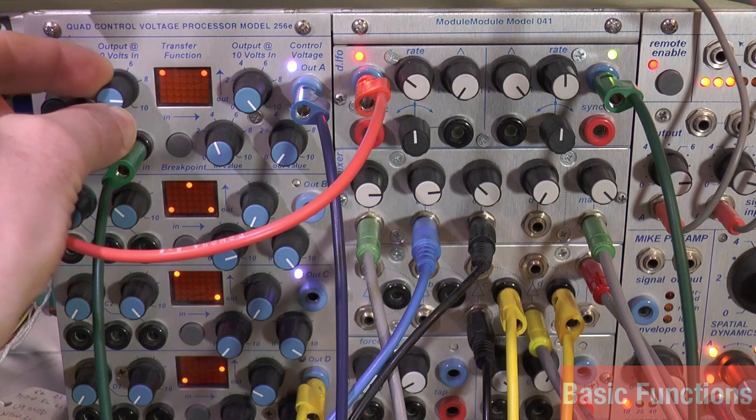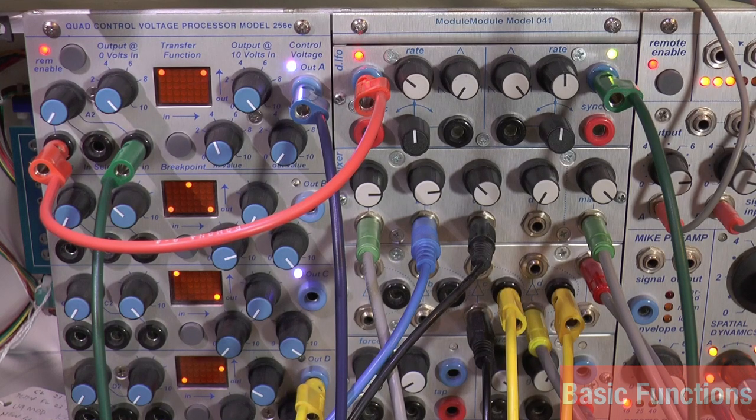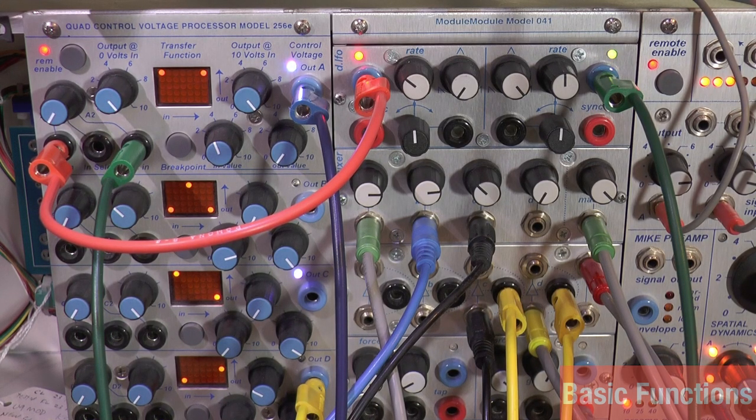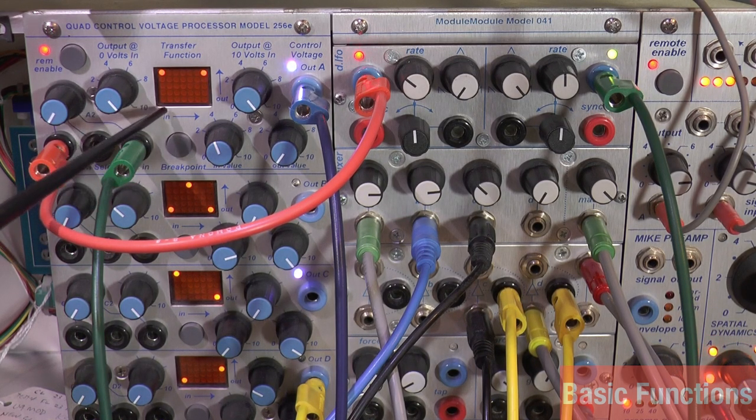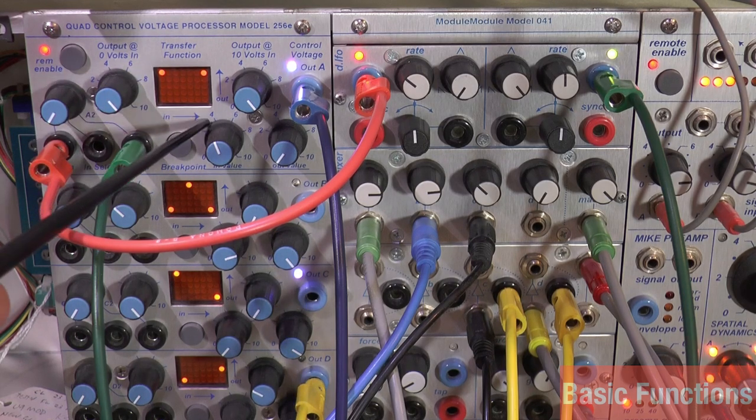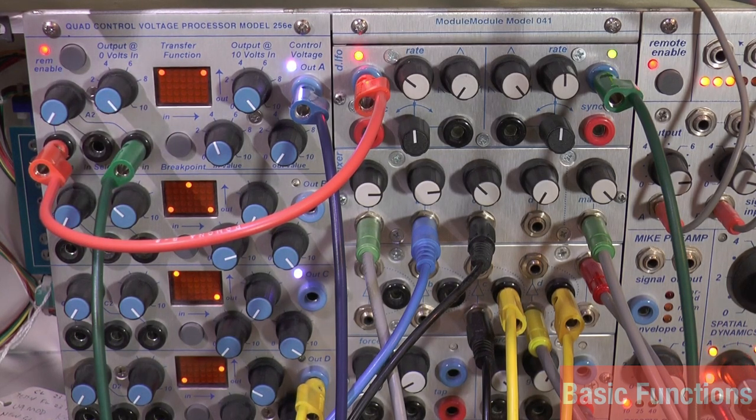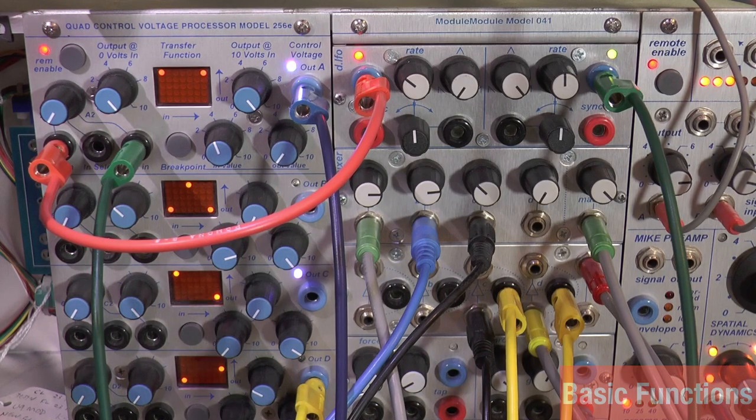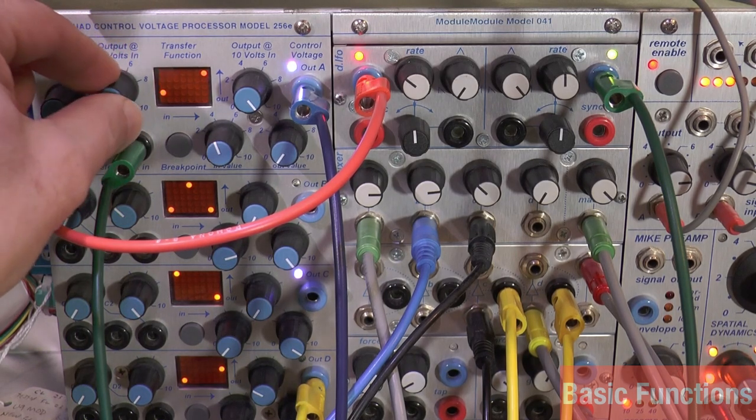Looking at the numbers, output at zero volts in, I have zero set to zero. But if zero is now set to 10, it's actually generating a control voltage of 10 volts out. So now zero volts in equals 10 volts out, and 10 volts equals 10 volts - just a straight DC 10 volts.